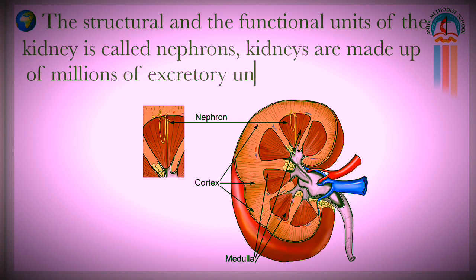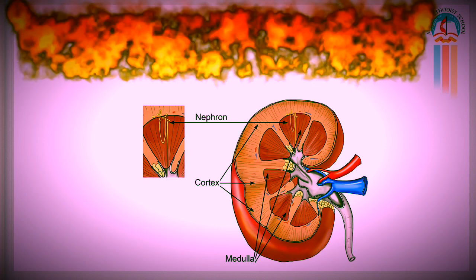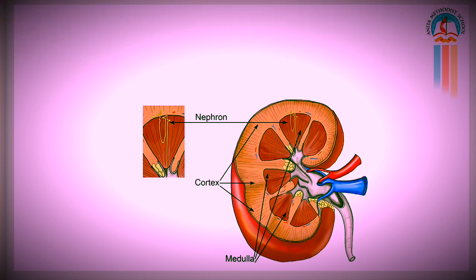The kidneys are made up of millions of excretory units called nephrons, which are the structural and functional units of the kidneys. Can you see the picture? Can you see the nephrons there? The yellow colored part.